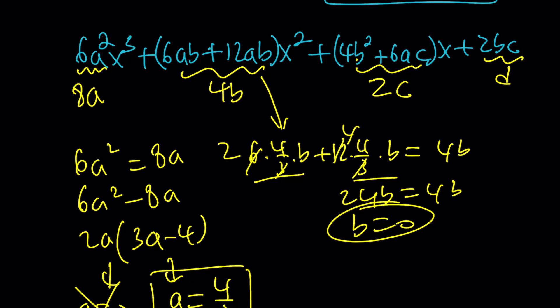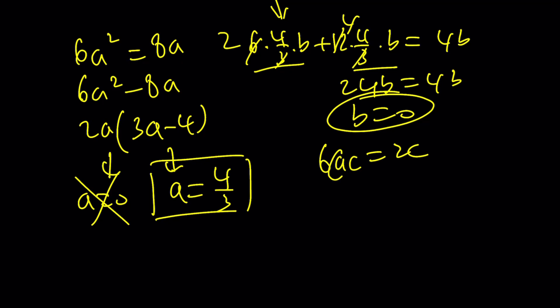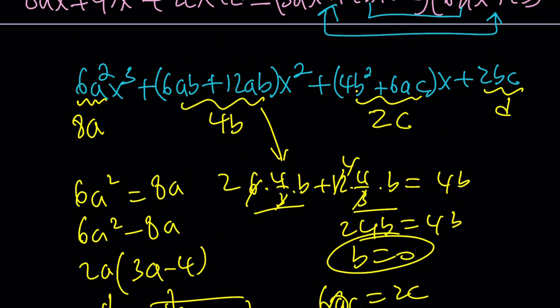That's fine because that's not the leading coefficient. If b is 0, from here, we get 6ac equals 2c. But we do know that a is equal to 4 thirds. So 6 times 4 thirds times c is going to be 2c. Again, from here, c is going to be 0. Nice. And if c is 0, d is also 0.